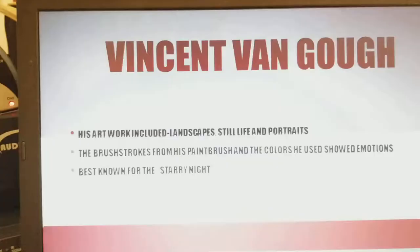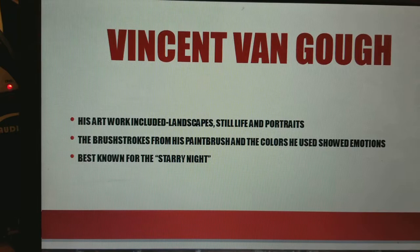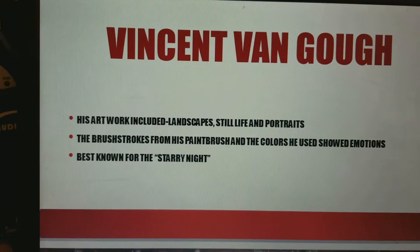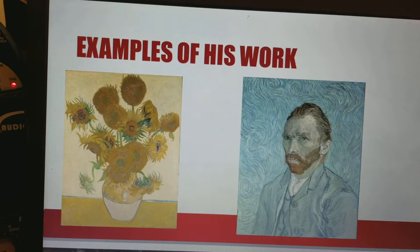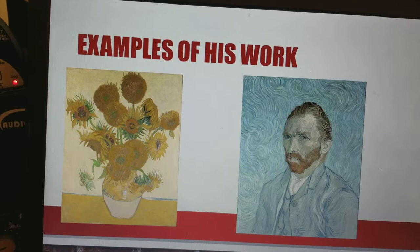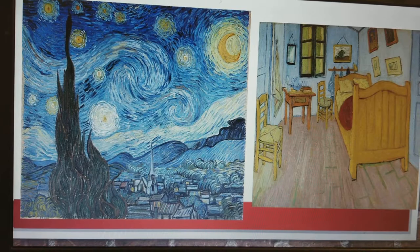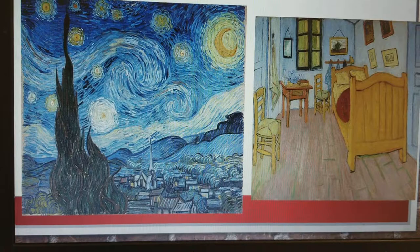Our last artist is Vincent Van Gogh. Vincent Van Gogh has artwork including landscapes, still lifes, and portraits. The brushstrokes from his paintbrushes and the colors he used show emotion. He is best known for the Starry Night. On the left is Sunflowers — very bright and colorful — compared to his portrait on the right, which is blue and kind of sad or cold. The Sunflowers feels warm and exciting; the portrait feels cold and sad. Here is the Starry Night, and then on the right is what you could call a still life portraying his room when he was younger.